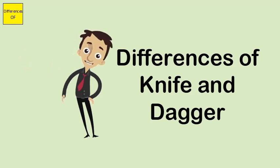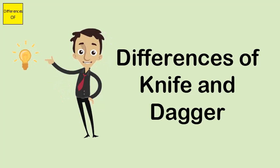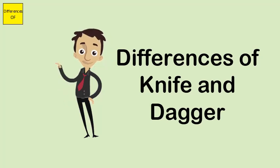Knives are primarily meant for use in kitchens only. However, in a time of emergency, a knife can be used as a weapon for self-defense. A dagger is meant for inflicting wounds.